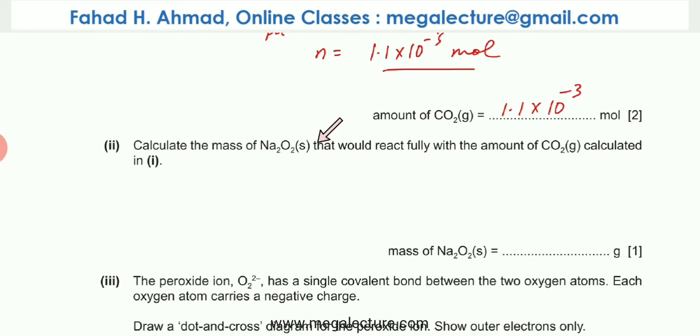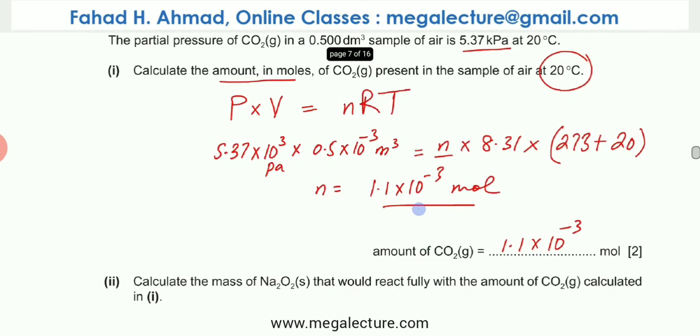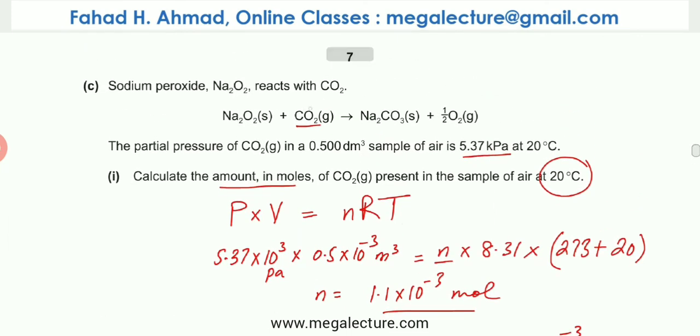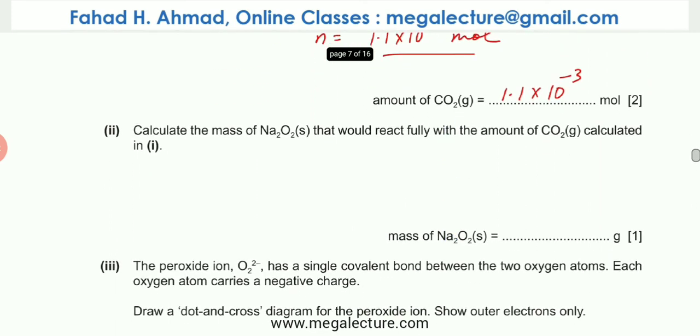You're then being asked to calculate the mass of the Na2O2 that would react fully with the amount of CO2 calculated. As you can see, Na2O2 and CO2 are in exactly the same ratio, 1:1. So the amount of moles of CO2 are going to be exactly the amount of moles of Na2O2. Na2O2 is going to have the same amount of moles which is 1.1 × 10⁻³ moles. I'm going to use this formula: moles equal to mass over Mr. If I take moles and multiply by Mr, I'm going to get mass.